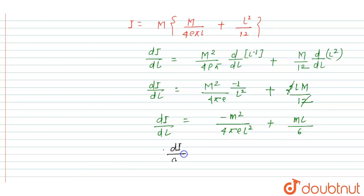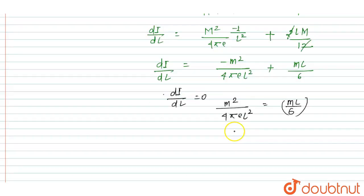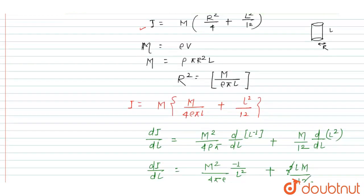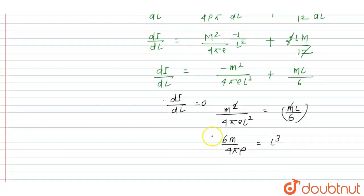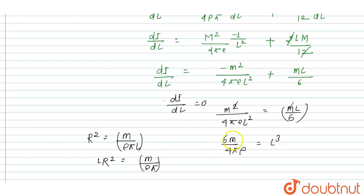For the maximum-minima condition, we set dI/dl = 0. So M²/(4πρl²) = Ml/6. Cancelling M from both sides, we get 6M/(4πρ) = l³. Since r² = M/(ρπl), we have M/(ρπ) = lr², so 6lr²/4 = l³, which simplifies to l²/r² = 6/4.